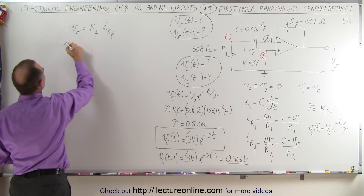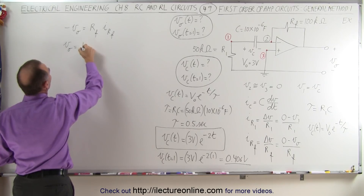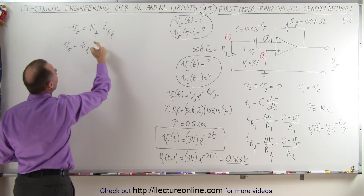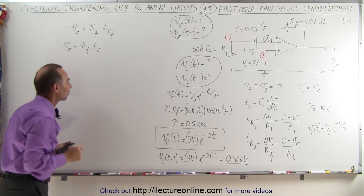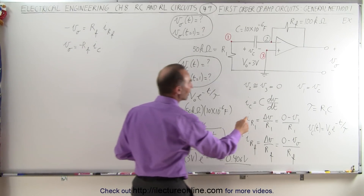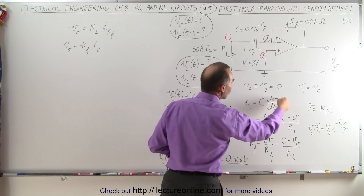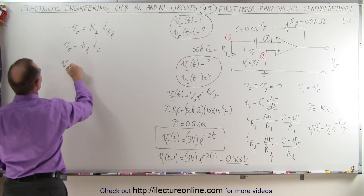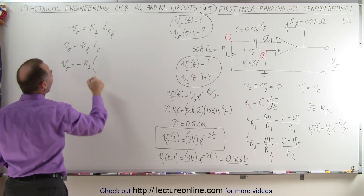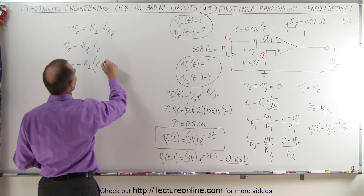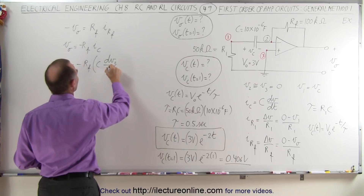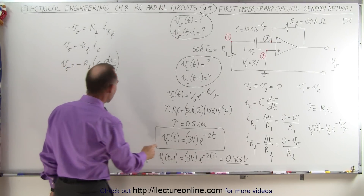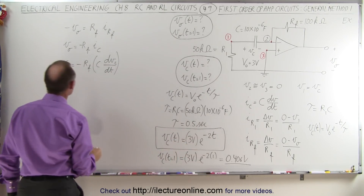The output voltage is therefore equal to minus R sub F times I sub C. We express the capacitor current in terms of the change of voltage with respect to time, so the output voltage equals minus the feedback resistor times the capacitance times the rate of change of the voltage across the capacitor with respect to time. Taking the derivative of the capacitor voltage expression, it will look as follows.